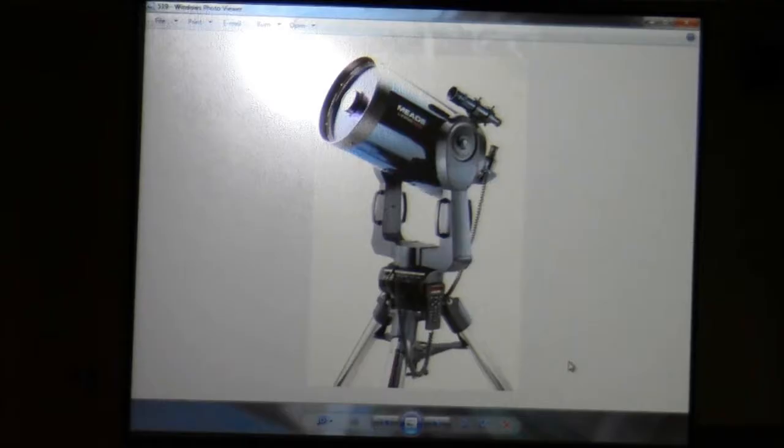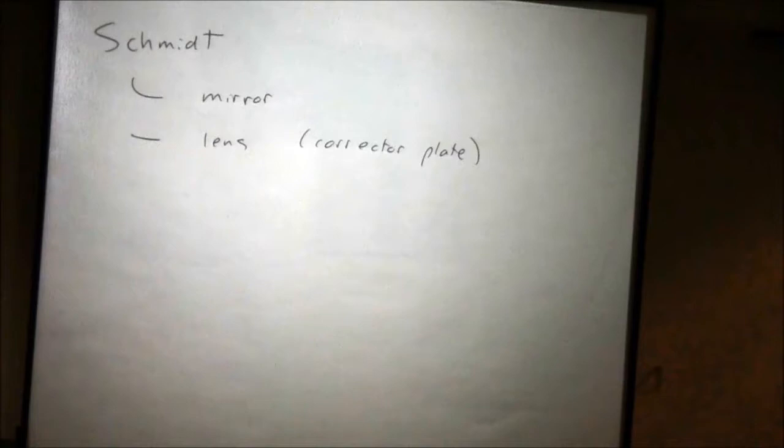There's one more type of telescope that we should consider, and that's a Schmidt telescope. These have both mirrors, a primary mirror, and also make use of a lens that's usually called a corrector plate or corrector lens.